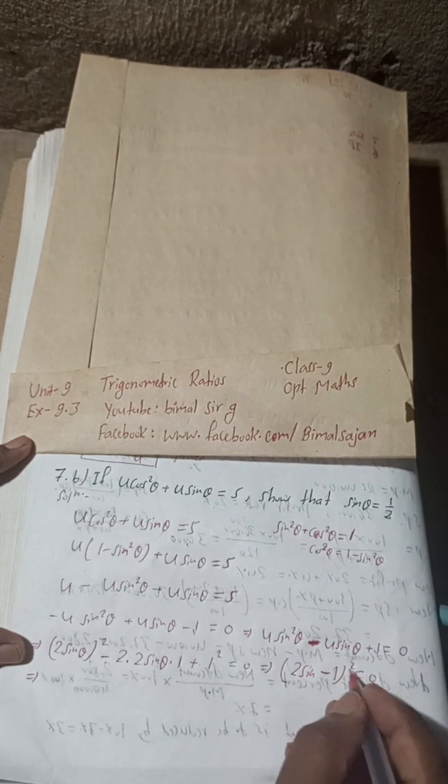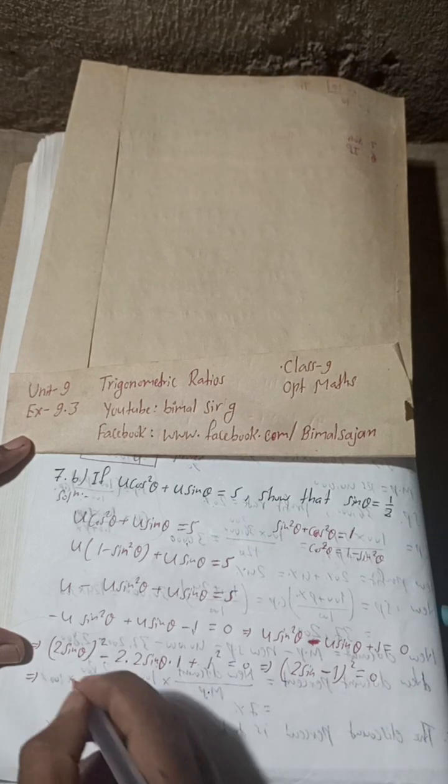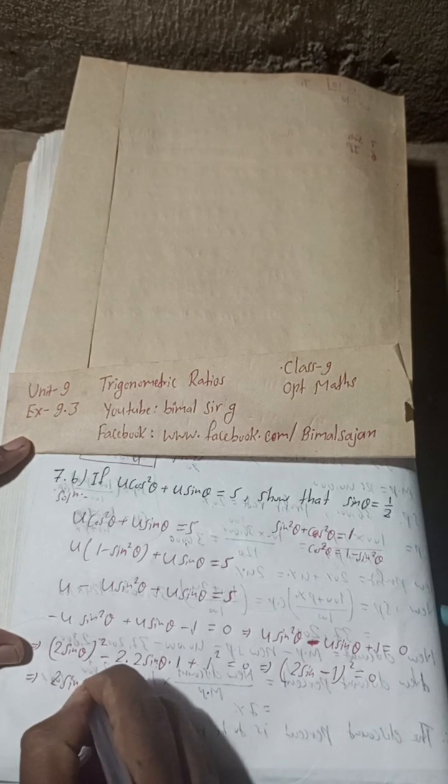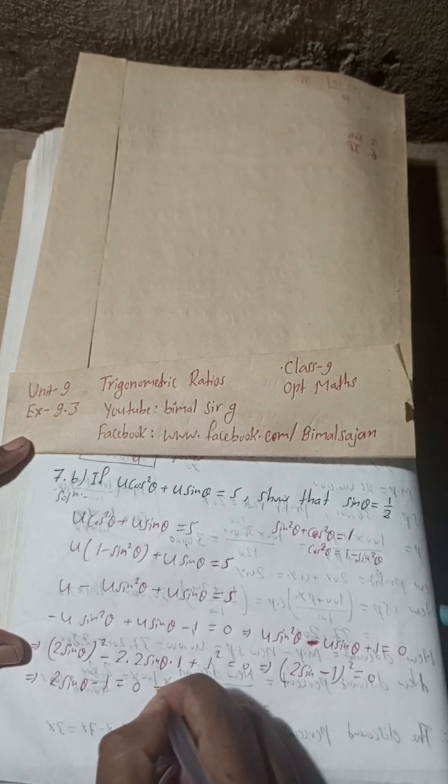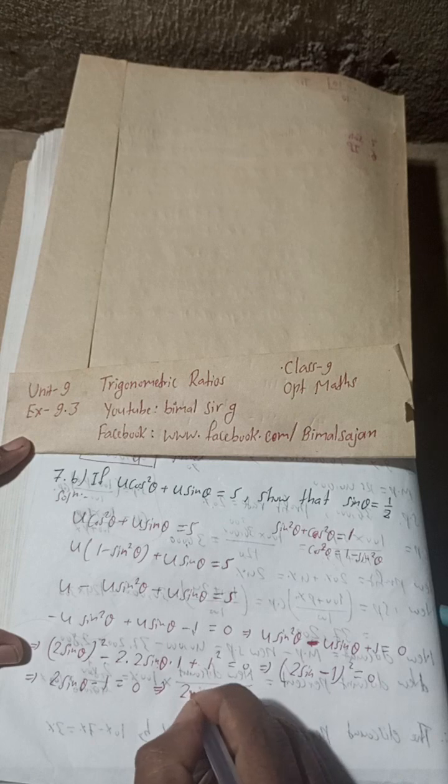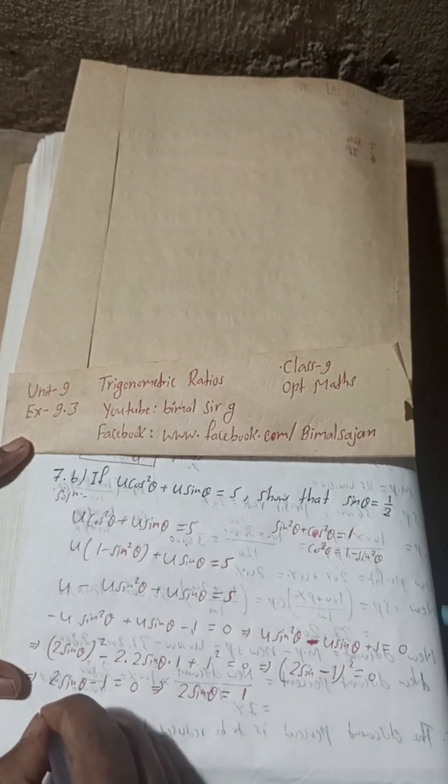(2sinθ - 1)² = 0. If you take root both sides, the square will cancel. So 2sinθ - 1 = 0, which implies 2sinθ = 1.